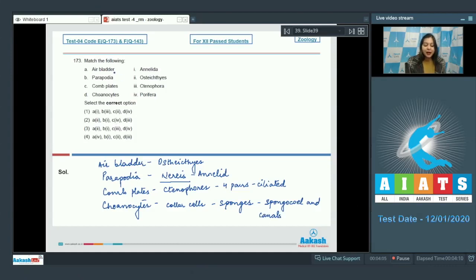Let us match the options. Air bladder should match with osteichthyes. So A should match with 2. Parapodia should match with annelida. That is B should match with 1. Comb plates are features of ctenophora. So C should match with 3. And coenocytes are present in porifera. So the correct option becomes option number 3.